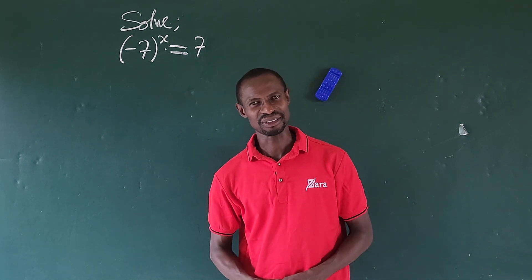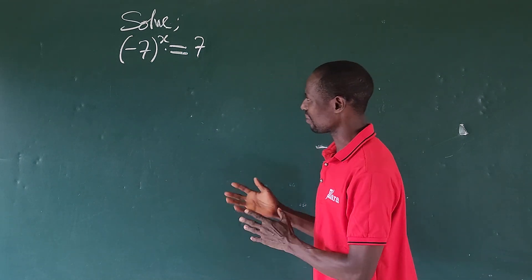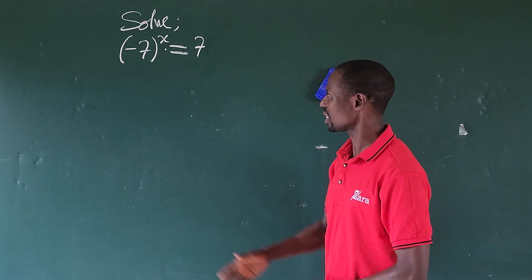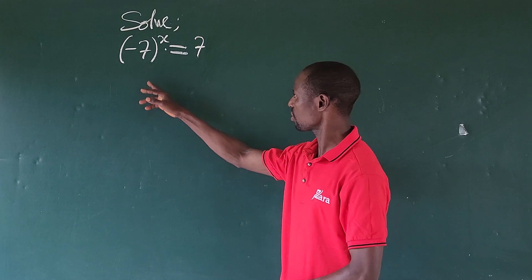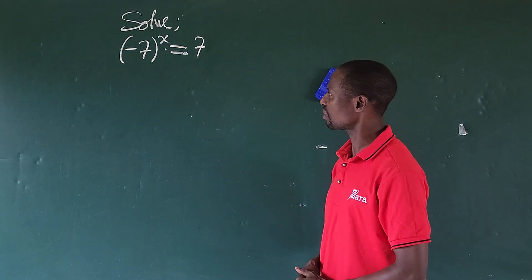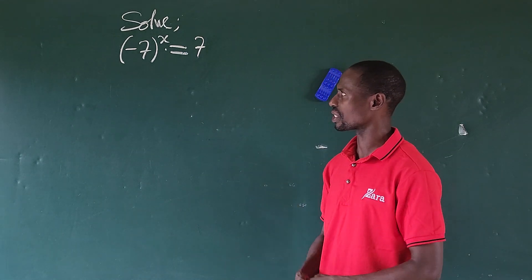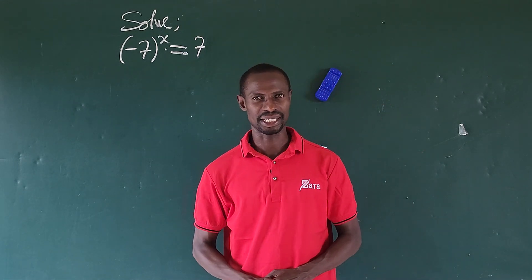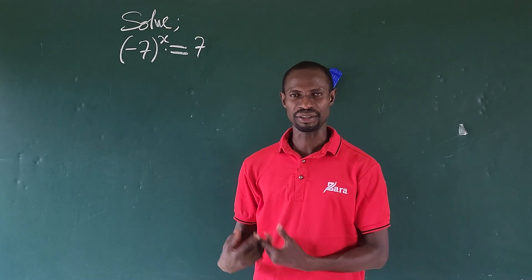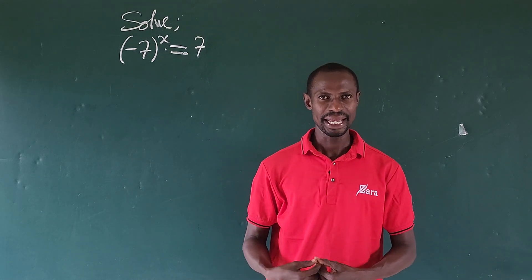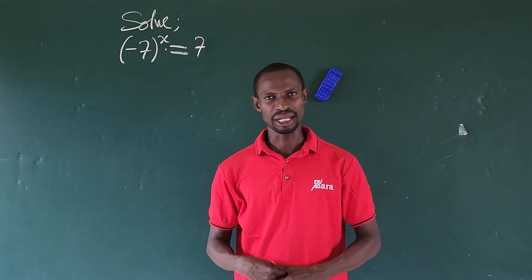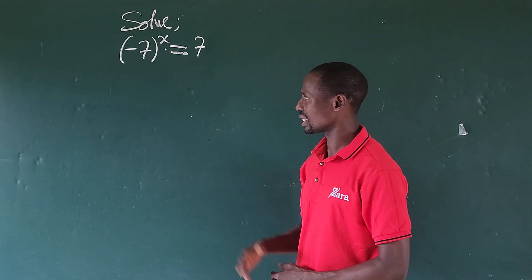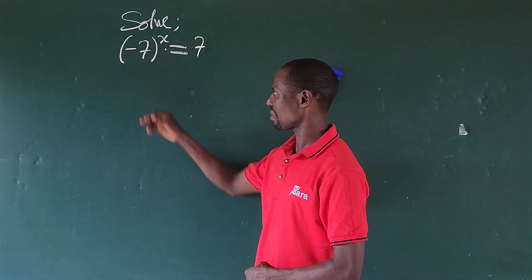Hi everyone, welcome to today's class. Today we have this math challenge: the question is (e minus 7) all to the power of x equals seven. What is the value of x? I've solved a similar challenge of this kind on this channel already, although that question was just a bracket of (e minus 5) to the power of x equal to five.